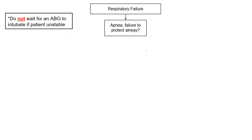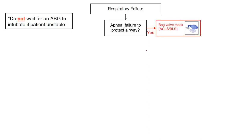Don't do that. The first thing is: are they apneic? Are they failing to protect the airway? If they are, you do bag-valve mask until you have to intubate the patient, especially if this is not reversible. If they're apneic and you think it's from too much opioids, you can try Narcan, but always have intubation in your back pocket.